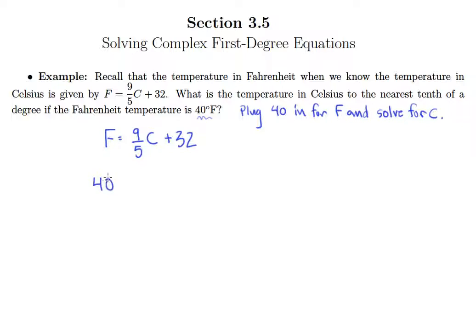So if 40 goes in for F, it looks like 40 equals 9 fifths C plus 32. And so now we're down to an equation that just has one variable and we know how to solve this type of equation.